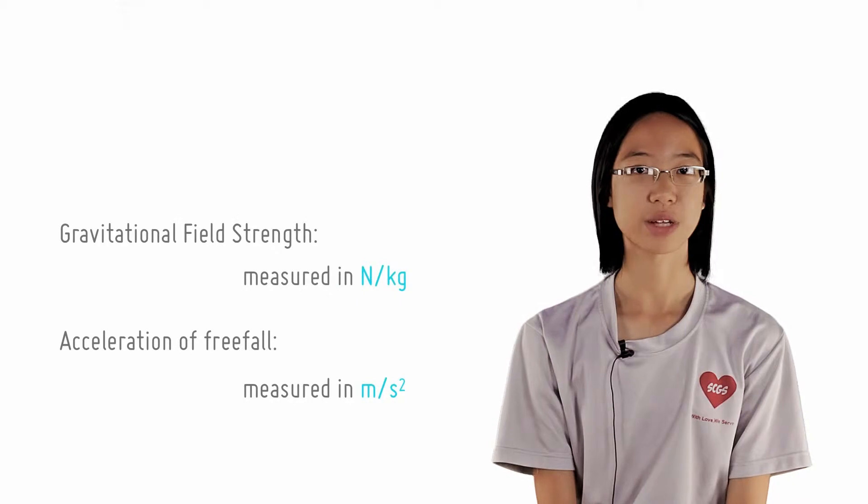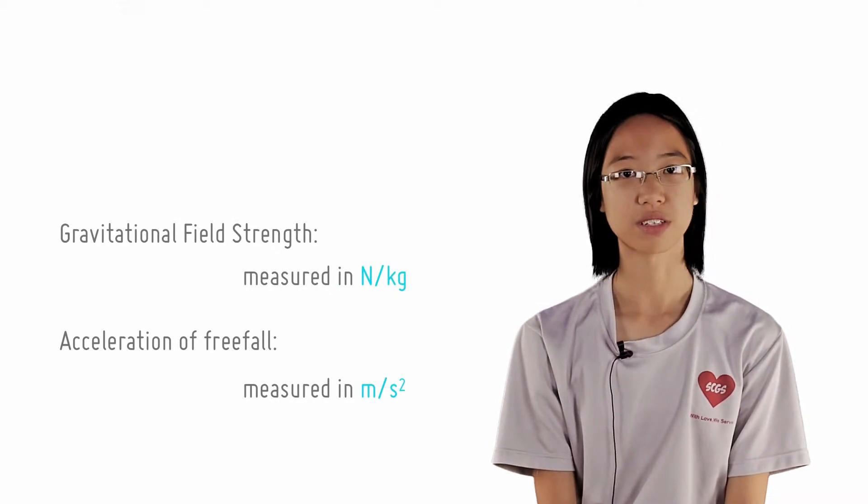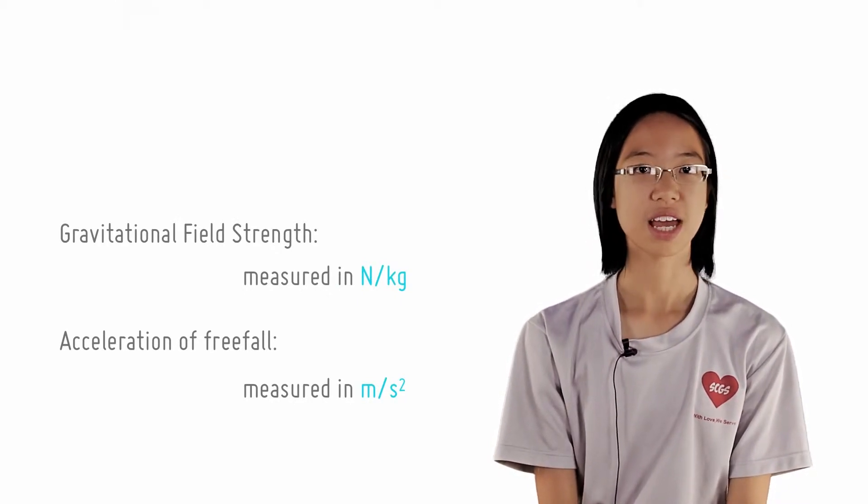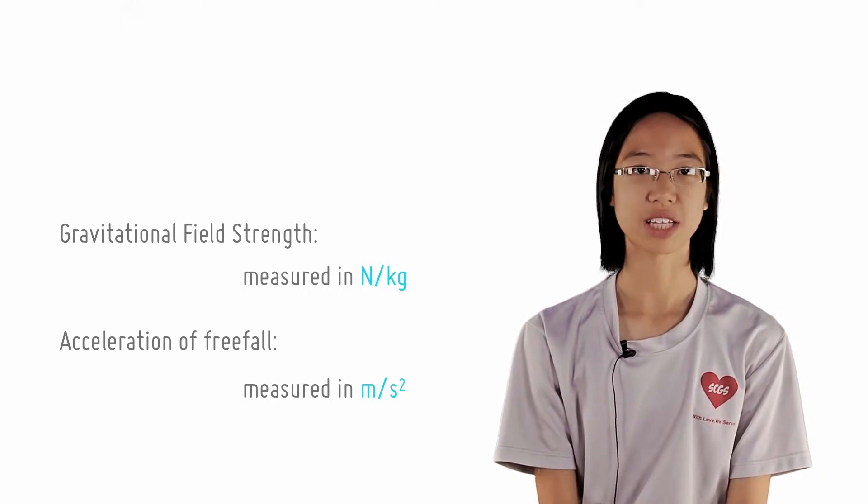Gravitational field strength, as you would expect, is the strength of the field and would be measured in newtons per kg. Acceleration of freefall, on the other hand, is measured in meters per second squared.